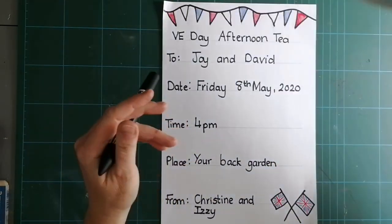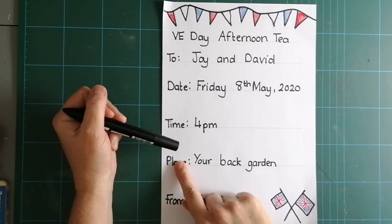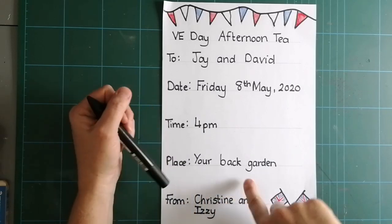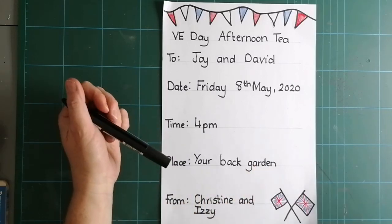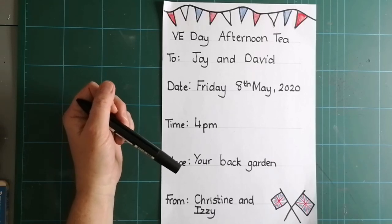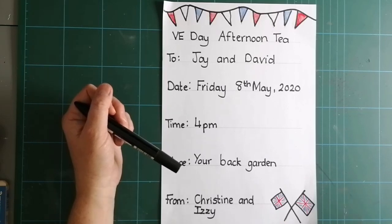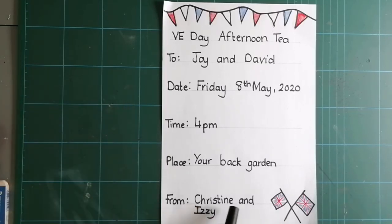Remember, 4pm. Place, is her own back garden, because she isn't allowed to come to our house at the moment, is she? She isn't allowed to come to my mammy's house at the moment. She does come, but she sits on the wall at the bottom of my mammy's drive, and my mammy stands on the doorstep. And it's from Christine and Izzy.